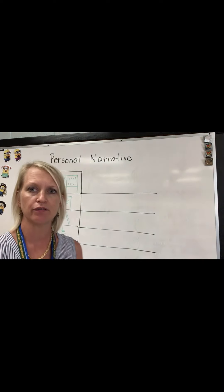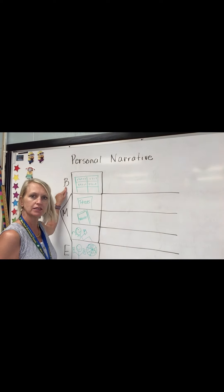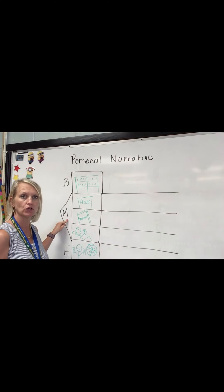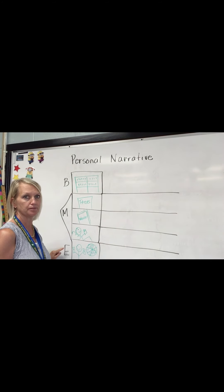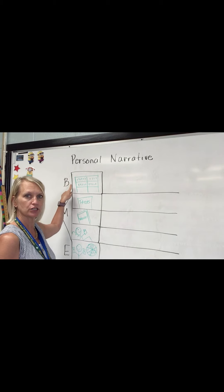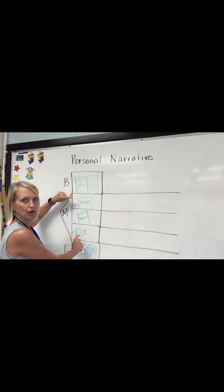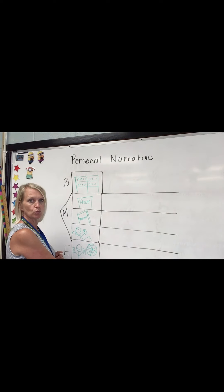On the board I've started one. It's going to say 'personal narrative' at the top. The B is for beginning, the M is for middle, and the E is for end. I drew a little box for a picture for the beginning. The middle has three boxes and the end has one.